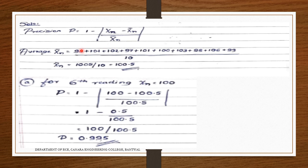The mean x̄_n is the average of all 10 values divided by 10. So: (98 + 101 + 102 + 97 + 101 + 100 + 103 + 98 + 106 + 99) / 10 = 1005 / 10 = 100.5. So x̄_n = 100.5.